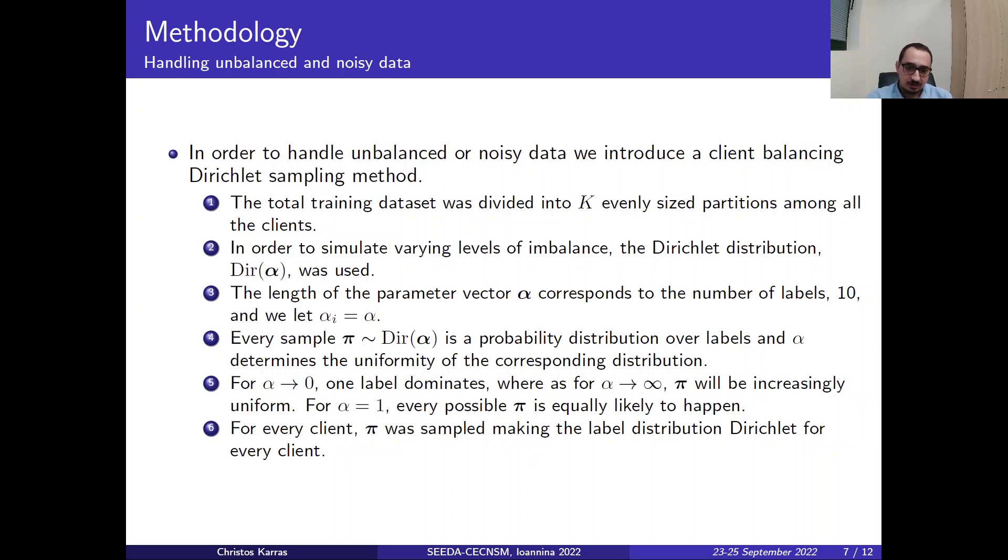Initially, the total training dataset is divided into K evenly sized partitions among all the clients. And in order to simulate the varying levels of imbalance in the dataset, we use the Dirichlet distribution shown as Dir(α).